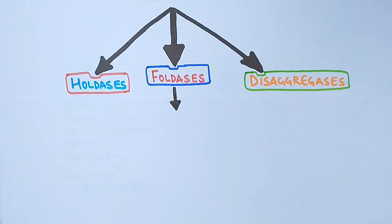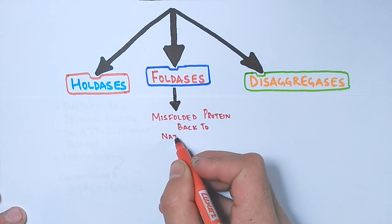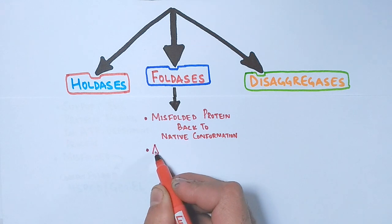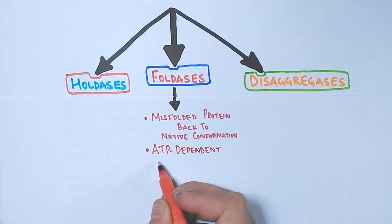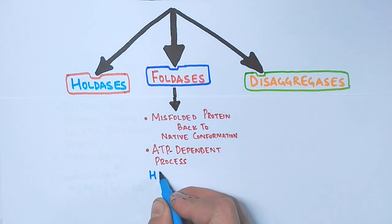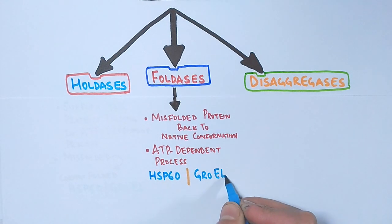Foldases as the name implies are the chaperones that assist in folding and also they transform the misfolded protein back to the native conformation. These foldases require ATP so they are ATP dependent. The example of foldases is HSP60 or GroEL in E. coli.